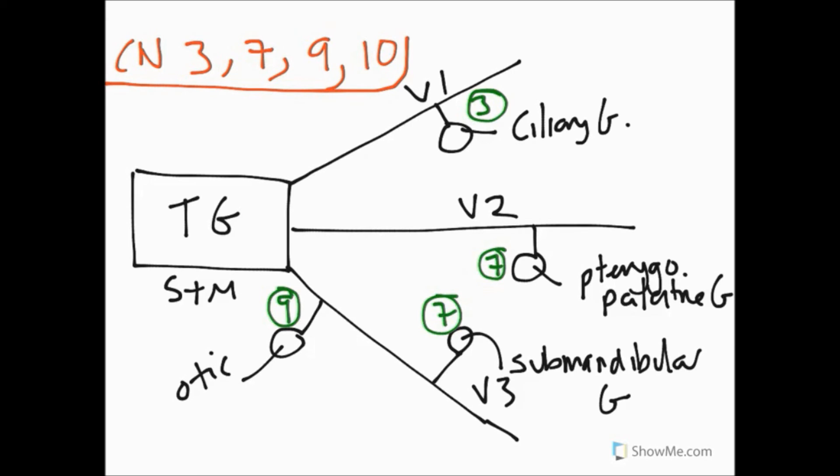So here you can see how the trigeminal nerve is anatomically holding onto these ganglia for preganglionic fibres to synapse, and that these preganglionic fibres are sent by either cranial nerves three, seven, nine, or ten.